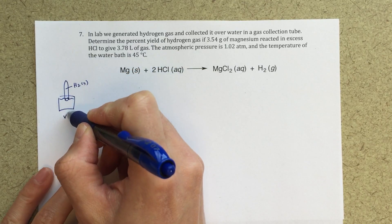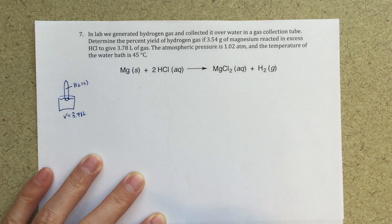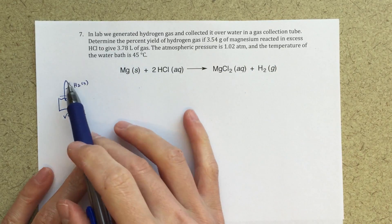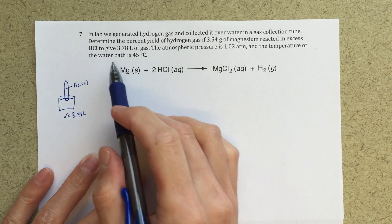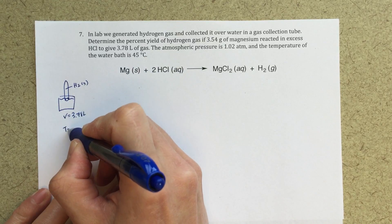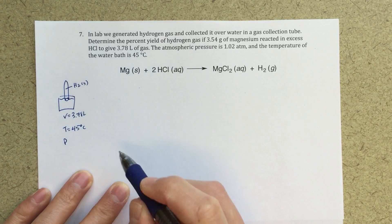The volume here is equal to 3.78 liters, so we've collected 3.78 liters of gas. We're given a temperature, 45 degrees Celsius.